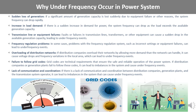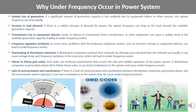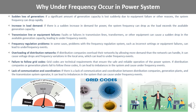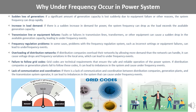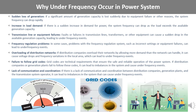Faults or failures in transmission lines, transformers, or other equipment can also lead to under-frequency events, causing a sudden drop in available generation capacity and frequency variations. In some cases, problems with the frequency regulation system, including issues with equipment settings or equipment failures, can lead to under-frequency events. Overloading of distribution networks is another potential cause — if distribution companies allow more demand than the network can handle, it can cause voltage drops and frequency variations in the local area. Grid codes are technical requirements that ensure the safe and reliable operation of the power system, and failure to follow these codes can lead to imbalances and under-frequency events.